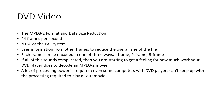Even though DVD storage capacity is huge, the uncompressed video data of a full length movie would never fit on a DVD. To fit a movie on a DVD you need video compression. A group called the Moving Pictures Expert Group, MPEG, establishes the standards for compressing moving pictures. When movies are put onto a DVD, they are encoded in MPEG-2 format and stored on the disc. This compression format is a widely accepted international standard. Your DVD player contains an MPEG-2 decoder which can uncompress this data as quickly as you can watch it.